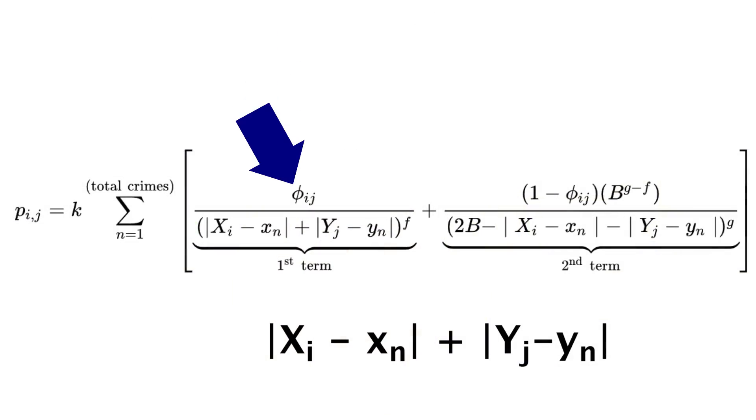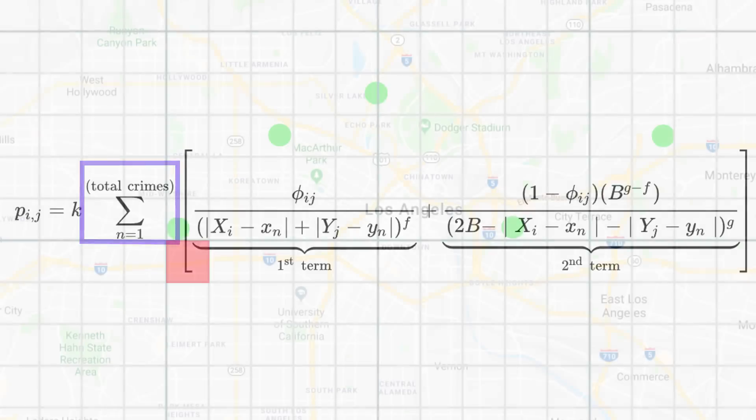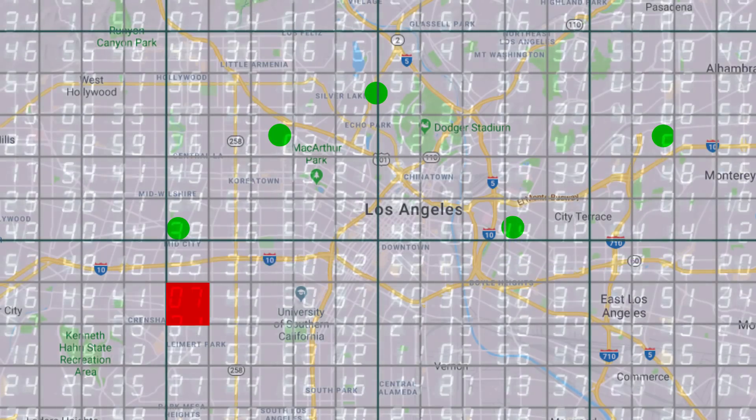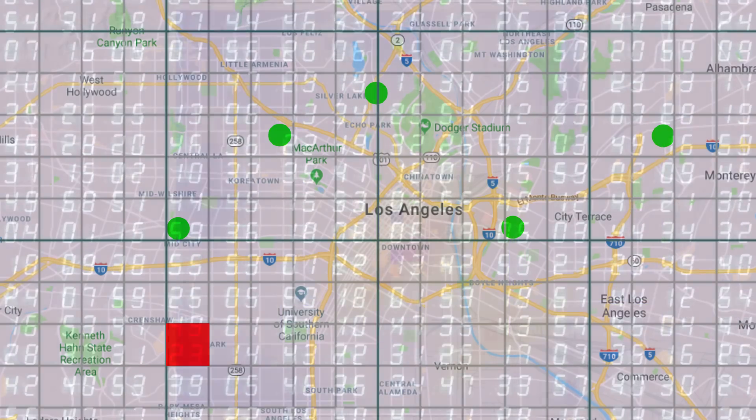Phi is sort of a constant that I'm not going to go into. And then g, f, and B are constants that just make certain parts of this equation matter more than others, or they add more weights to certain parts. Then lastly, this part, I'm sure you guys know, means we calculate those two fractions for every single crime committed and add the results. Do this for every square in our grid, and we create a heat map of probability.